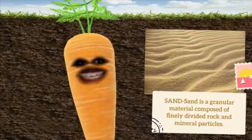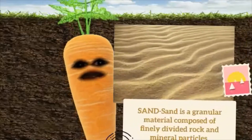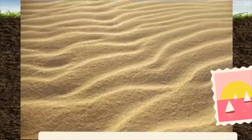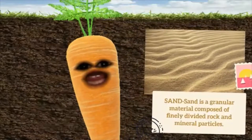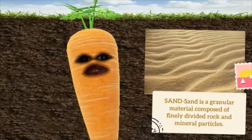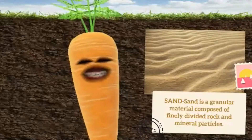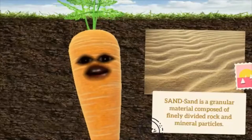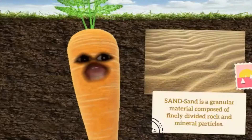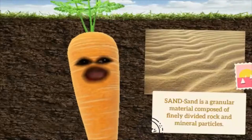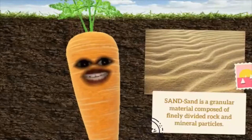The second one is sand. Sand is a granular material composed of finely divided rock and mineral particles. Sand is not suitable for planting because sand has no nutrients or composed materials needed for gardening.